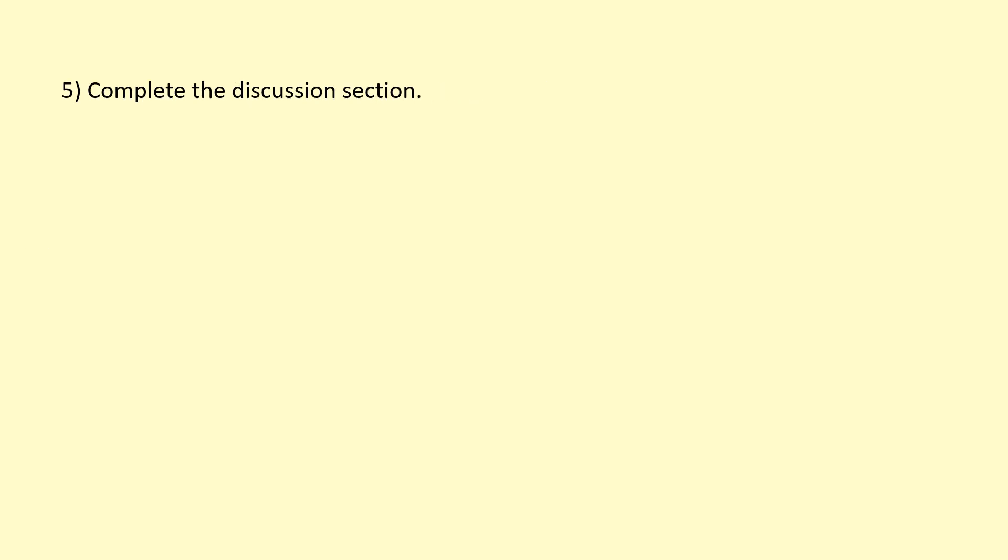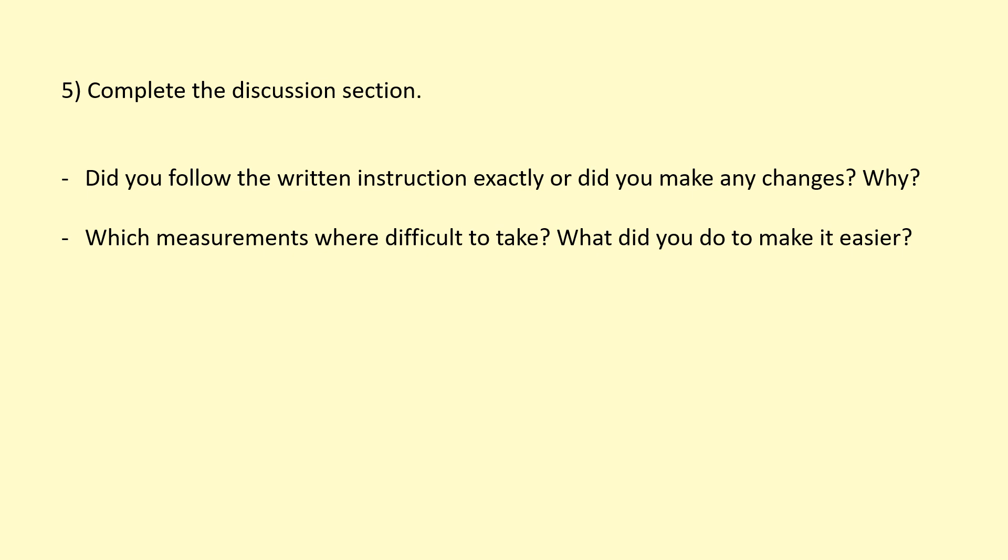Finally, complete the discussion section of your handbook. So this is where you write down, for example, if you didn't follow the written instructions exactly and you decided to change something, you can write down why and that's okay if you do that. Which measurements did you find difficult to take and how did you make it easier? So you can include that in your discussion section. And also what can you conclude from your data? So the equation for frequency is inversely proportional to the length as you can see. One over 2L. T is a constant because we kept the mass on the end of the string constant, and mass per unit length is also constant. So it should be inversely proportional. And just looking at the table, the results in your table, do you think it follows that trend?